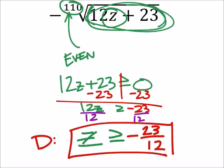That right there is the domain. So what this is saying right here, and that was kind of an equality thing right there, is if I put z in as negative 23 twelfths into this expression...